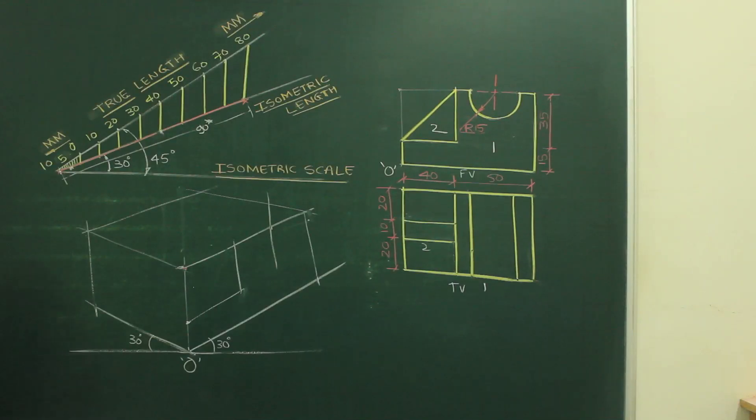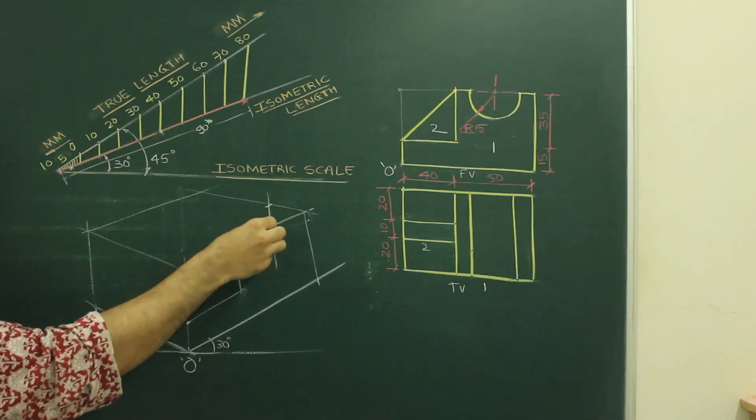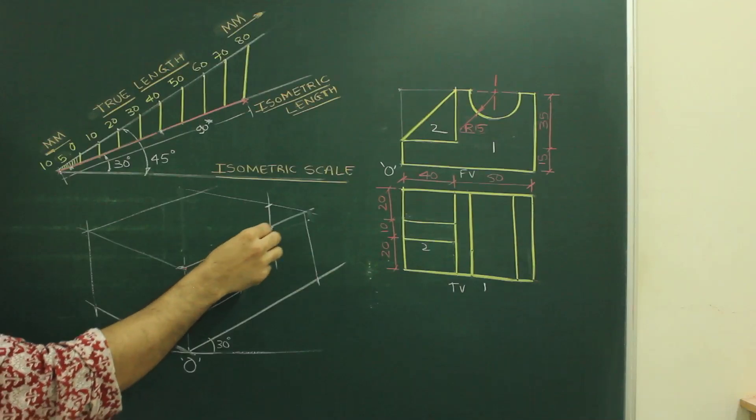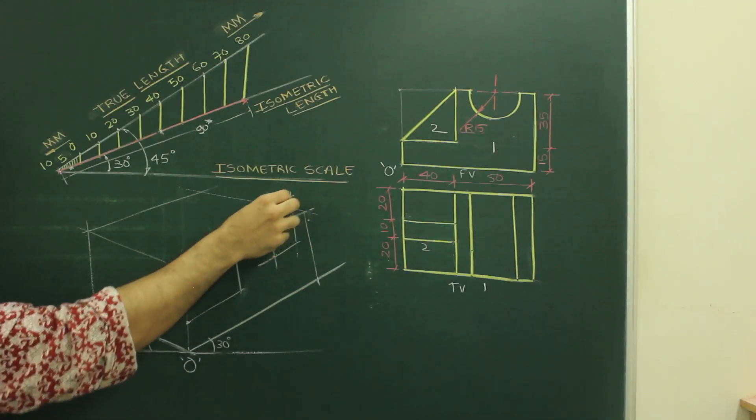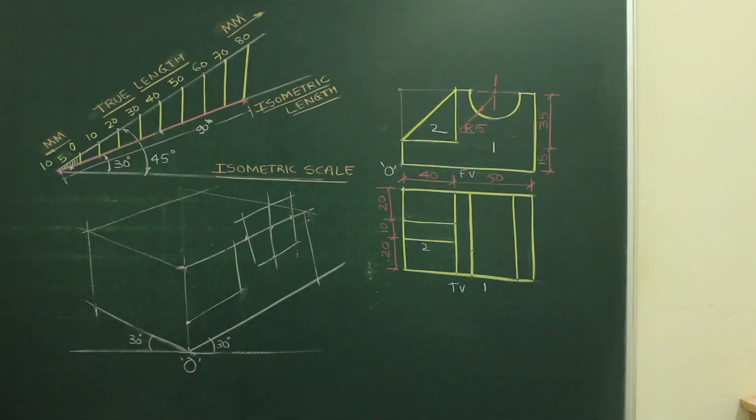We need to draw rhombus for radius 15. So the rhombus will be how much? 30. So what we will do? We will take 15 from here. See this. Now remember one thing. We have to take all the lengths from isometric length. So we will take 15 from here. And you cut from here. You cut up, down, left, right. And you draw rhombus.